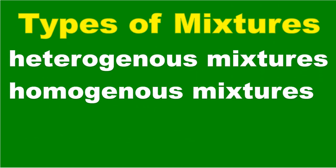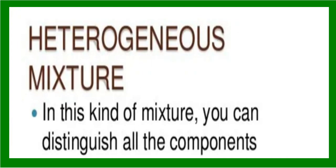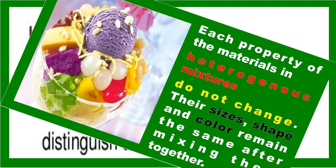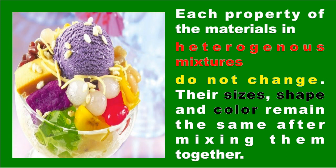There are two types of mixtures: heterogeneous mixtures and homogeneous mixtures. Mixed materials can be classified depending on the appearance of the resulting mixture. When solid materials are mixed with solid materials and each of the combined materials can be easily identified and distinguished from one another, these mixtures are called heterogeneous mixtures. In halo-halo, you can easily identify or distinguish the ingredients — it is a heterogeneous mixture. Each property of the materials in heterogeneous mixtures does not change; their size, shape, and color remain the same after mixing.